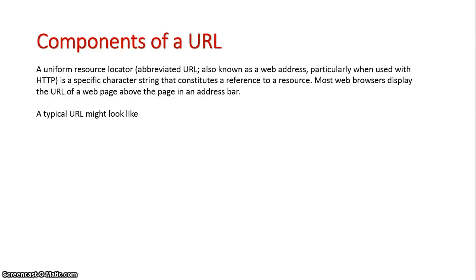We're now going to take a look at the components of a uniform resource locator, otherwise known as a URL. Basically, this is a specific line of characters that directs us to resources on the internet, and it's comprised of a few different parts.